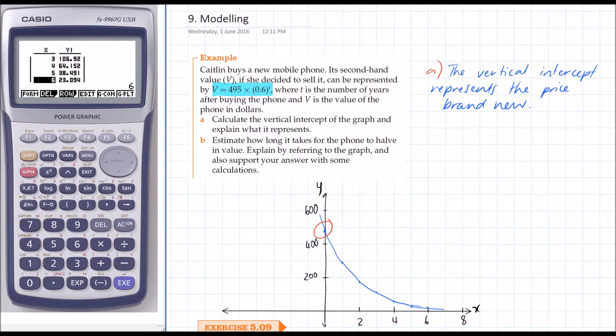The second question is saying estimate how long it takes for the phone to half in value. So if we're estimating, we can use our graph for that. We're looking at half of 495, so 495 divided by 2, that's just around 250. If we sketch a line in across here and sketch that down,